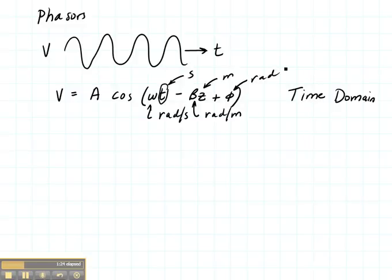Now the time domain form is very useful. It's the sort of thing we'd see on an oscilloscope. But most of the time we want to do our math in the frequency domain, because it's easier. The frequency domain is also called the phasor domain.